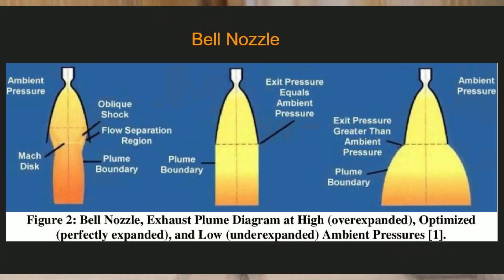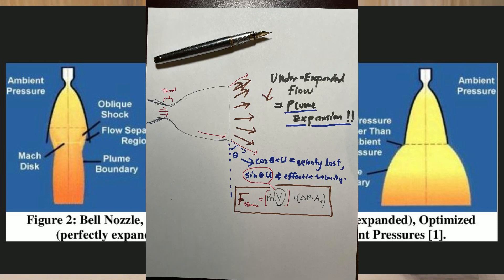The current problem is that a new rocket nozzle needs to be designed as the current designs, such as the bell nozzle, have large amounts of plume expansion and delinearization of exhaust flow as altitude is increased, and this results in a significant loss of effective thrust.